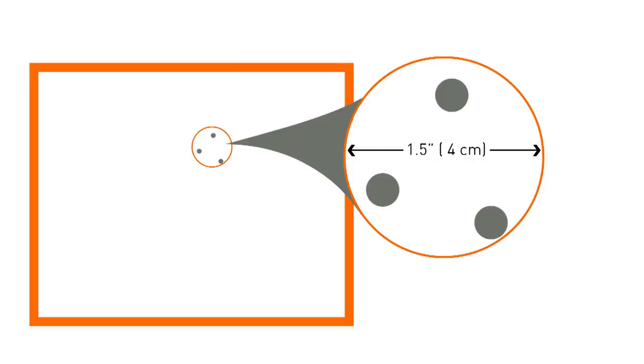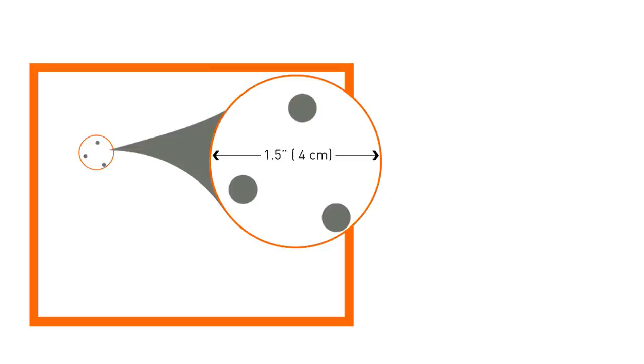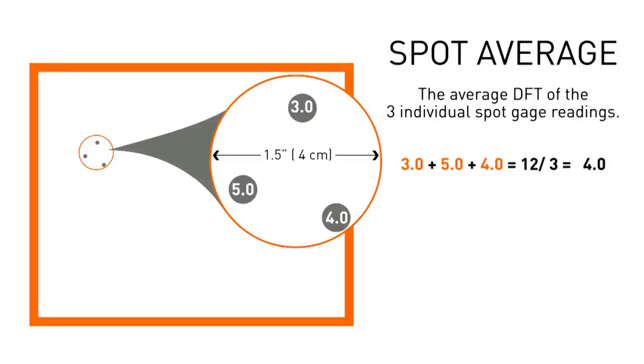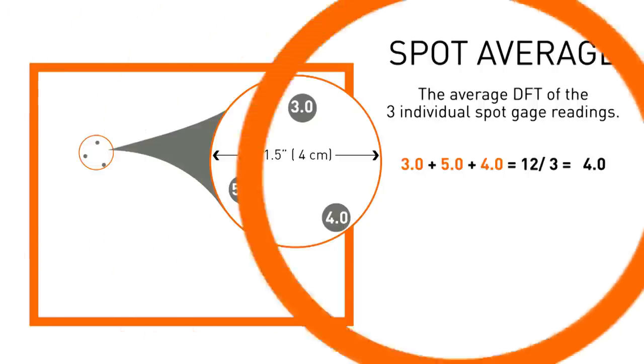Step 3. Within each of these spots, you'll now need to take at least 3 gauge readings. A gauge reading is one of the 3 DFT measurements taken within a spot. The size of the spot is no greater than 1.5 inches or 4 centimeters in diameter. The average of these gauge readings equals the inspection value of the spot.